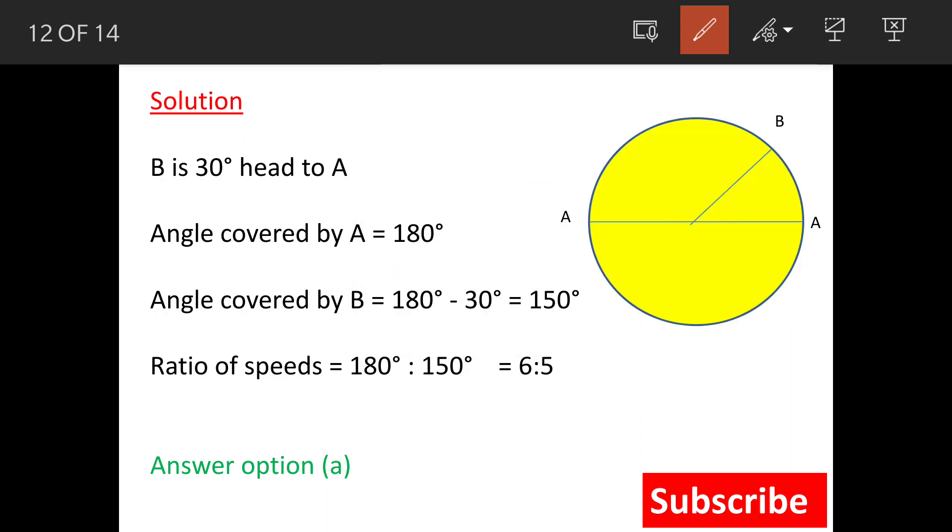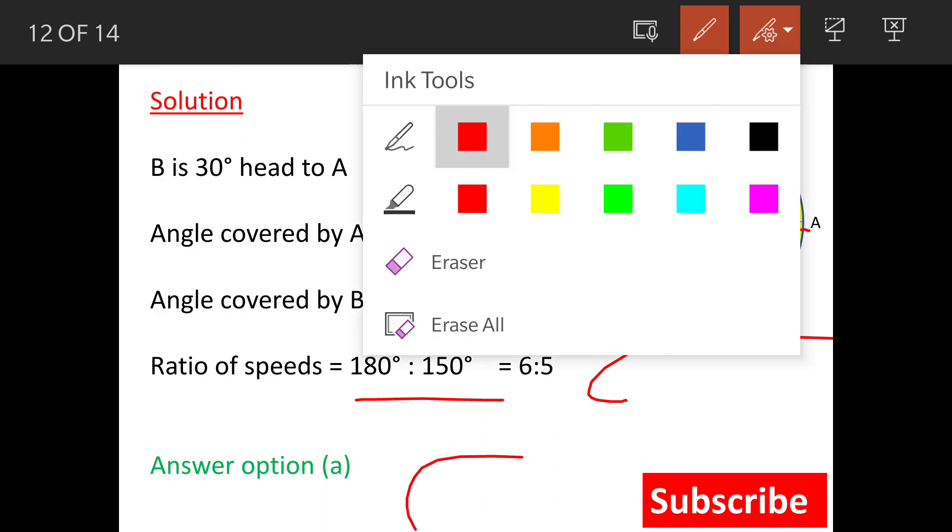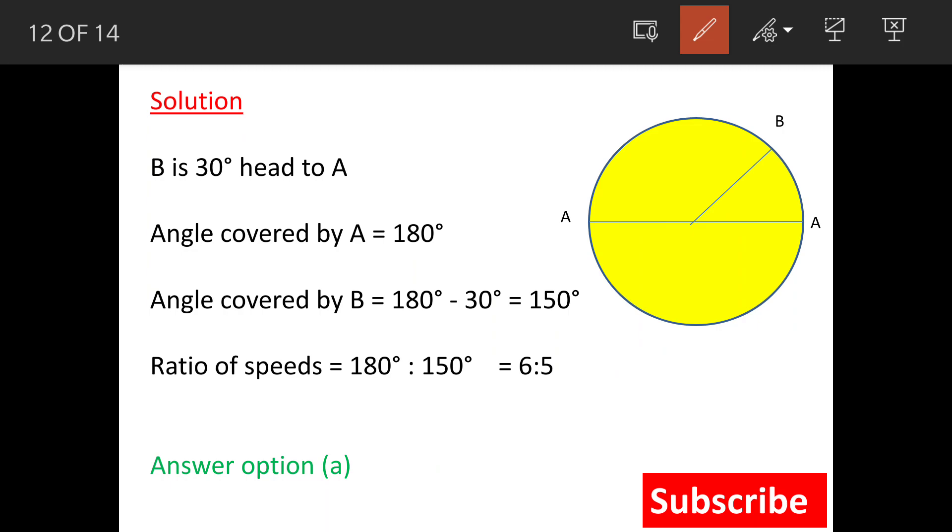B is going to cover his angle, which is also 180 degrees less this 30 degrees, so the angle covered by B is 150 degrees. So now ratio of these two angles, if you work out, it is 6 to 5. So our answer is option A. Thank you.